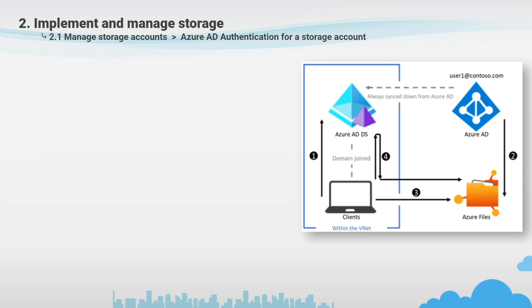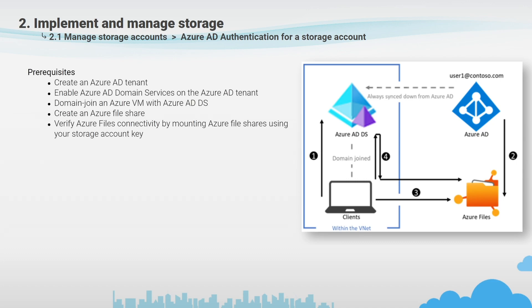Azure Storage supports authentication over SMB for Azure Files using the Kerberos protocol to authenticate with either on-premise Active Directory or Azure AD. When an identity associated with a user attempts to access data in Azure file shares, the request is sent to the domain service — either your on-premise AD or Azure AD — to authenticate. If authentication is successful, a Kerberos token is returned. The client then sends a request with this token and Azure Files uses it to authorize the request. Prerequisites include creating an Azure AD directory with domain services enabled and having devices domain-joined. You also need to create the Azure file share and mount it on the devices.